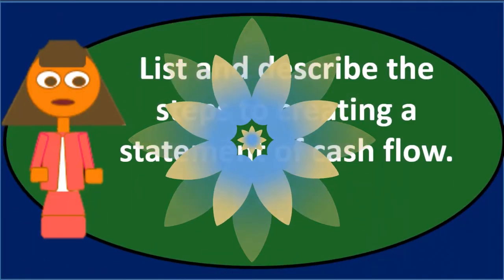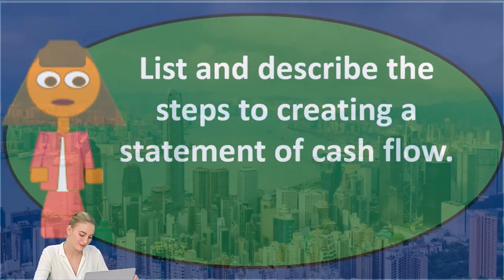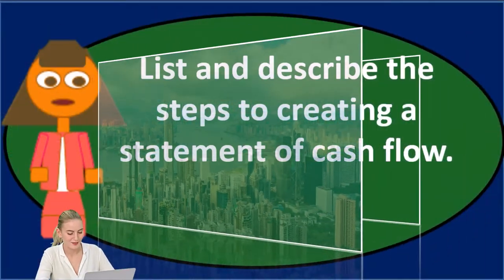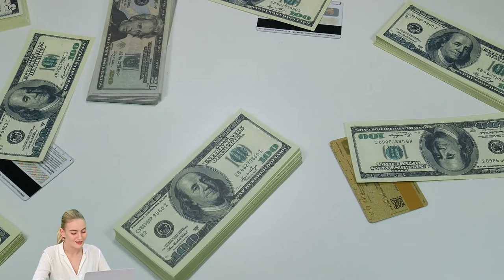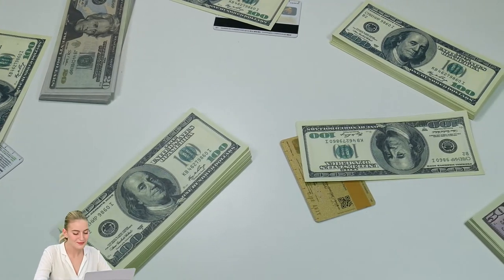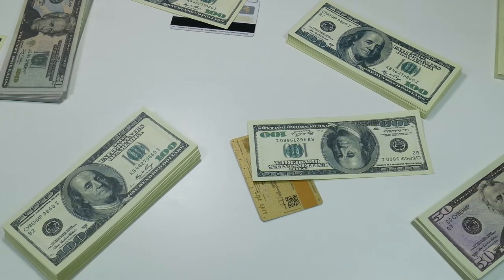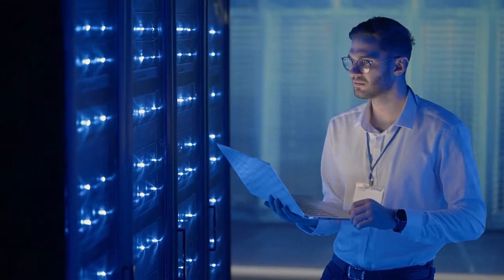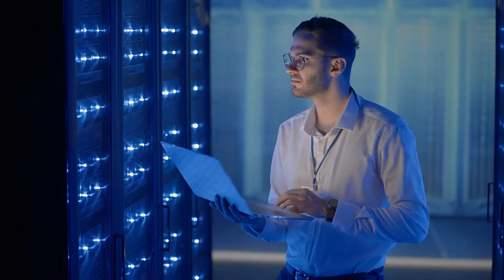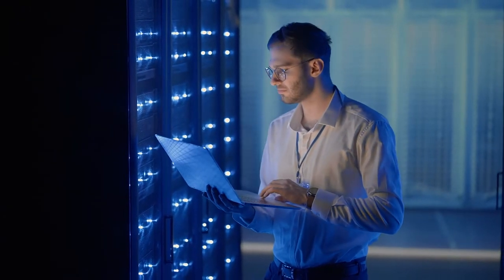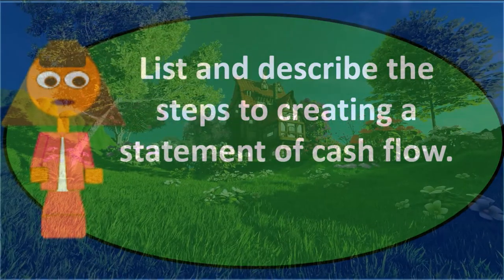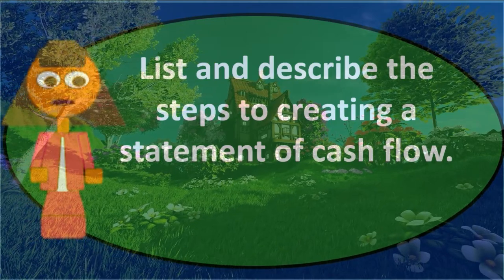Next, set up the statement of cash flows outline, which includes three categories: operating activities, investing activities, and financing activities. We take our worksheet and look through all those changes, trying to find a home for each one within the three sections. The goal of the statement of cash flows is to find the change in cash. We go through each line item on the worksheet and determine whether each difference is an operating, investing, or financing activity.